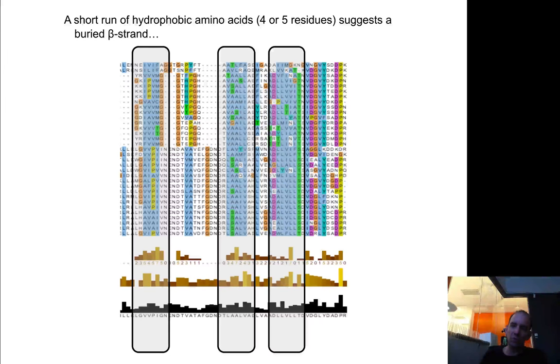And if you just have a short stretch of like four or five hydrophobic amino acids, that would indicate that it would be a buried beta strand.